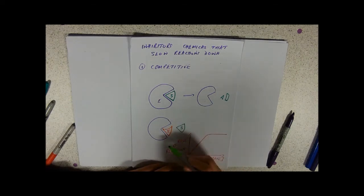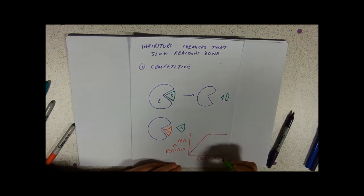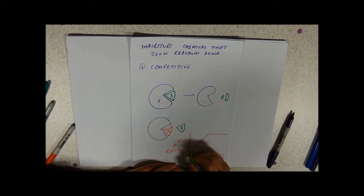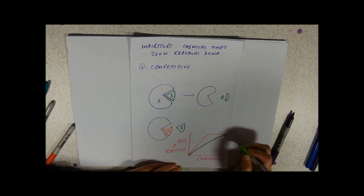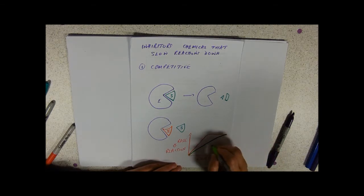But the more substrate we have, the more likely it is the substrate will get to the active site first. So as we get to these really high concentrations of substrate, what we find is that with the inhibitor, although it does slow it down, eventually you'll have enough substrate in that it's pretty much the normal rate of reaction.